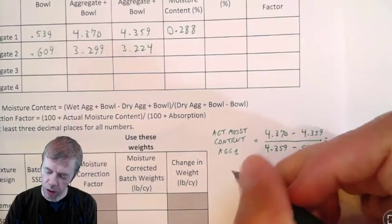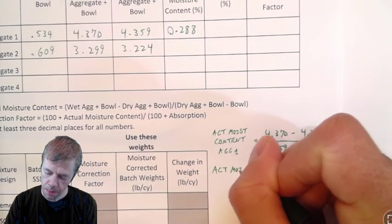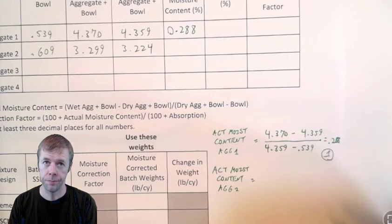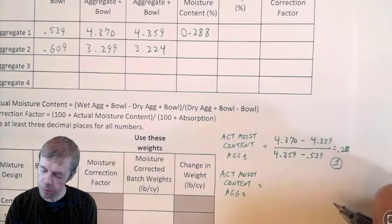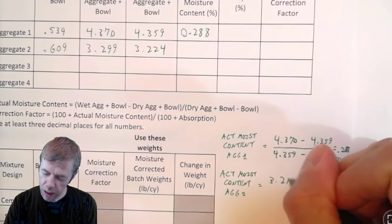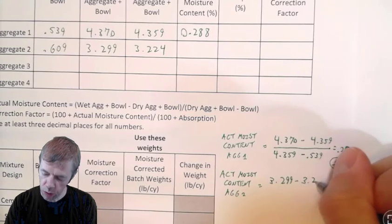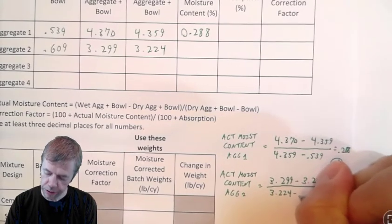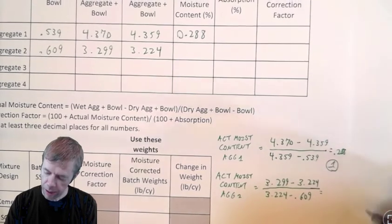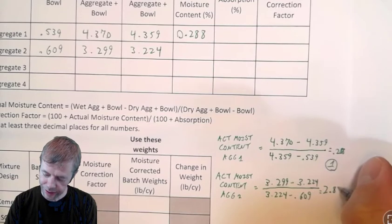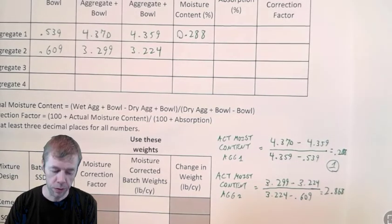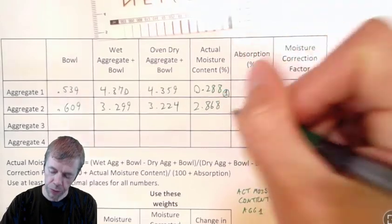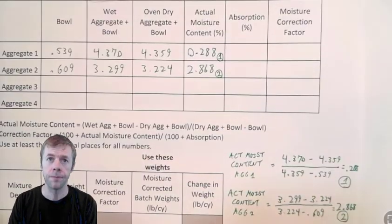Now let's do the actual moisture content for aggregate number two. We're going to do the same calculation: 3.299 minus 3.224, all divided by 3.224 minus 0.609. That happens to be equal to 2.868. Three decimal places — that's important. So this number is 2.868, and that is calc number two.